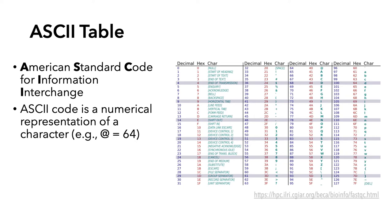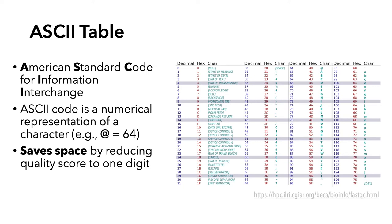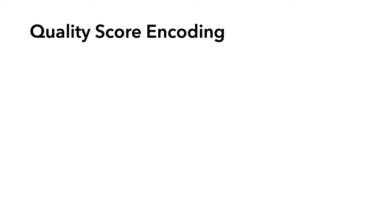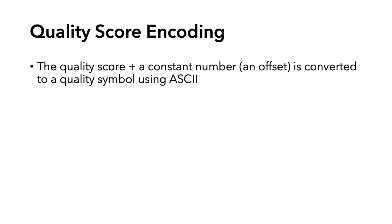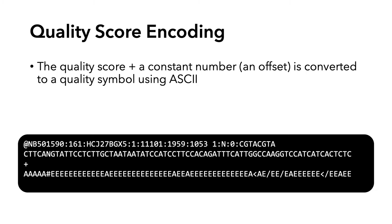A small digression to talk about ASCII tables. ASCII stands for the American Standard Code for Information Exchange, and an ASCII code is a numerical representation of a character. For example, the at symbol corresponds to a number of 64. ASCII scores save space by reducing quality scores to one digit. To encode quality scores, you take the quality score and a constant number, often referred to as an offset, and convert that to a quality symbol using the ASCII table.